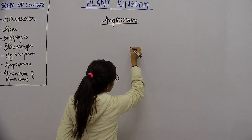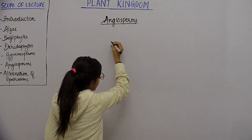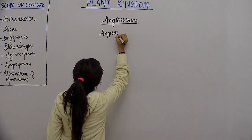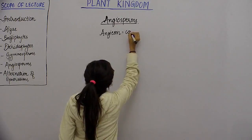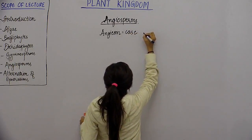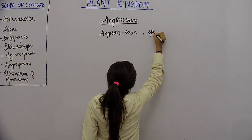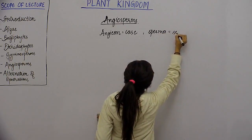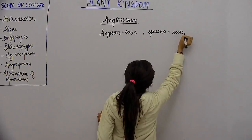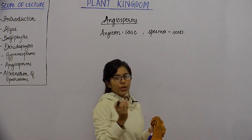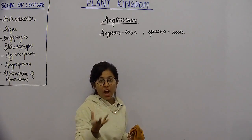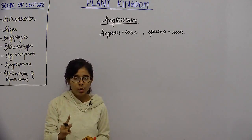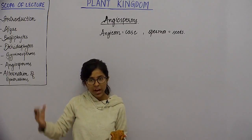In angiosperms, 'angiosperm' is a Greek word: 'angion' means case and 'sperma' means seeds. So it means that the seeds are surrounded by a tissue — the flower. The flower is its key characteristic, a very important feature not found in any other phylum.